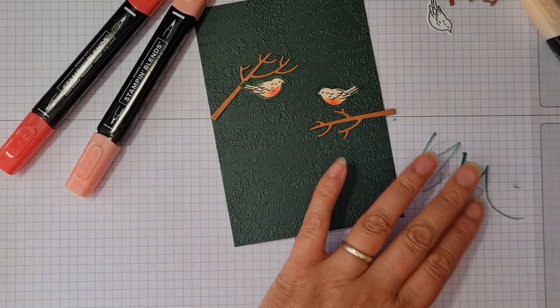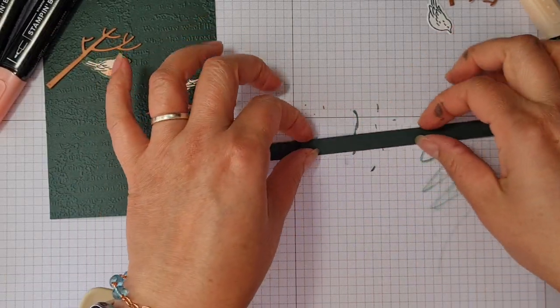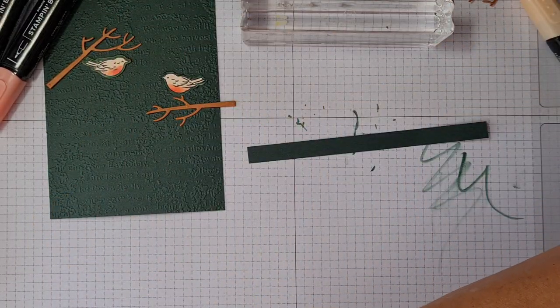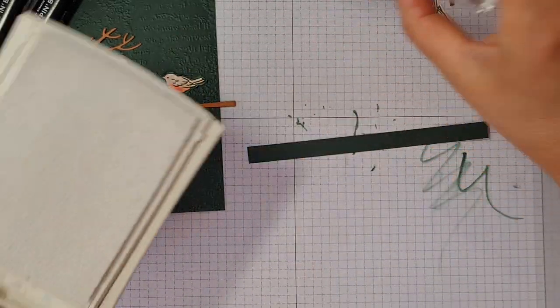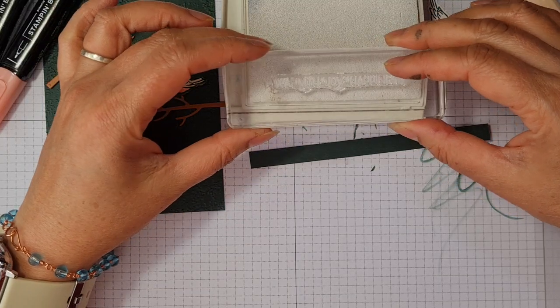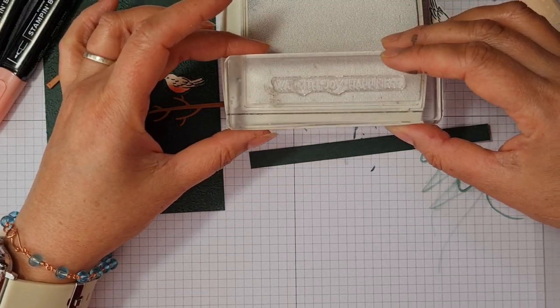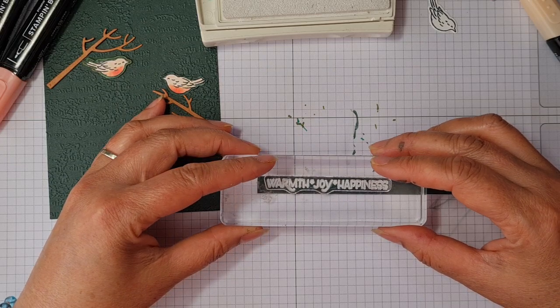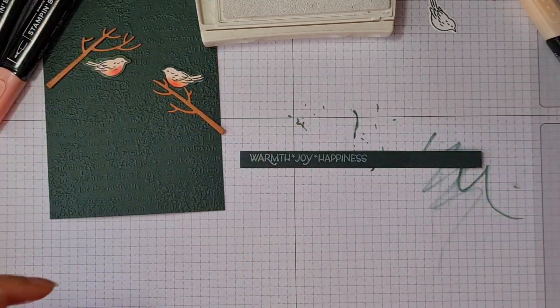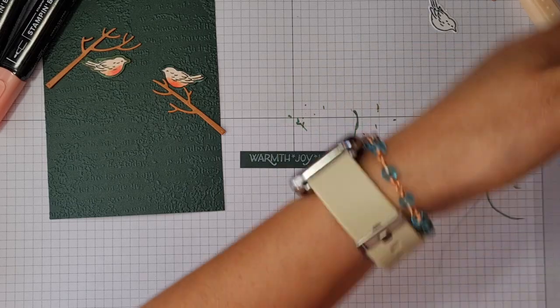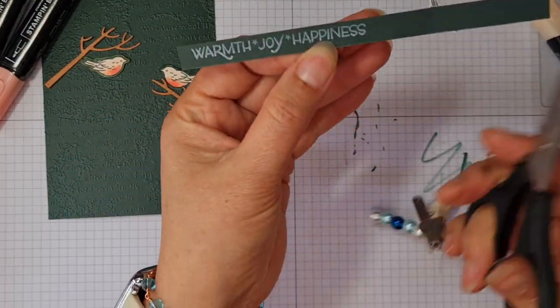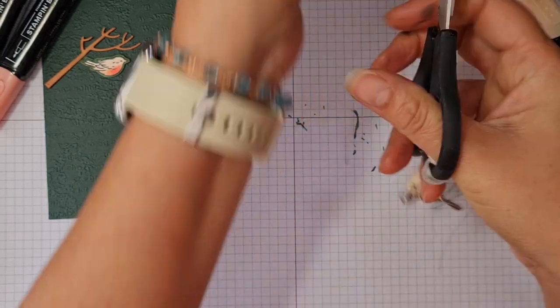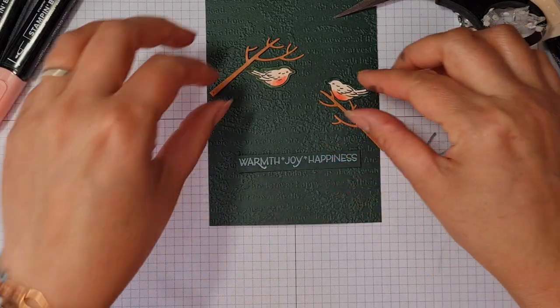And then just keeping with the simplicity of this card, I'm going to use some of the scrap bits that I've got spare. And I'm going to stamp this lovely sentiment, it says warmth, joy, happiness, with some Whisper White ink. Now a tip with the Whisper White ink is to dab a few times. Don't push down too hard, you just need to build up that ink onto your stamp. Try not to push down too hard, because with these sentiment stamps, they've got some little narrow areas and if you push down too hard, sometimes you can end up distorting.